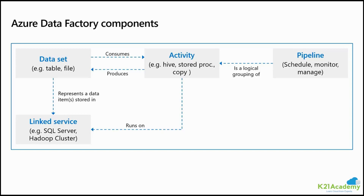Let us now understand the other three components with one example. Imagine you have database A and database B, and you want to copy some data from database A into database B. To do so, you will use one type of activity called copy activity. Copy activity will copy data from the source into the sink location. To provide the configuration settings for reading from database A and writing into database B, you will create linked services.